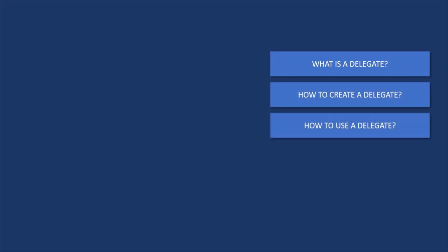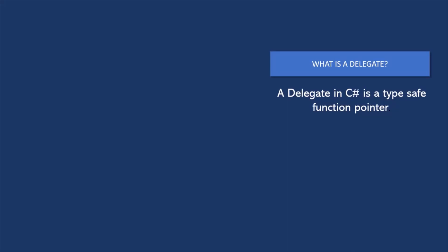So what is a delegate? A delegate in C-Sharp is a type-safe function pointer. In this definition, there are two points to note. First, a delegate is a function pointer. And second, it is a type-safe function pointer. Let's try to understand these two points with an example.